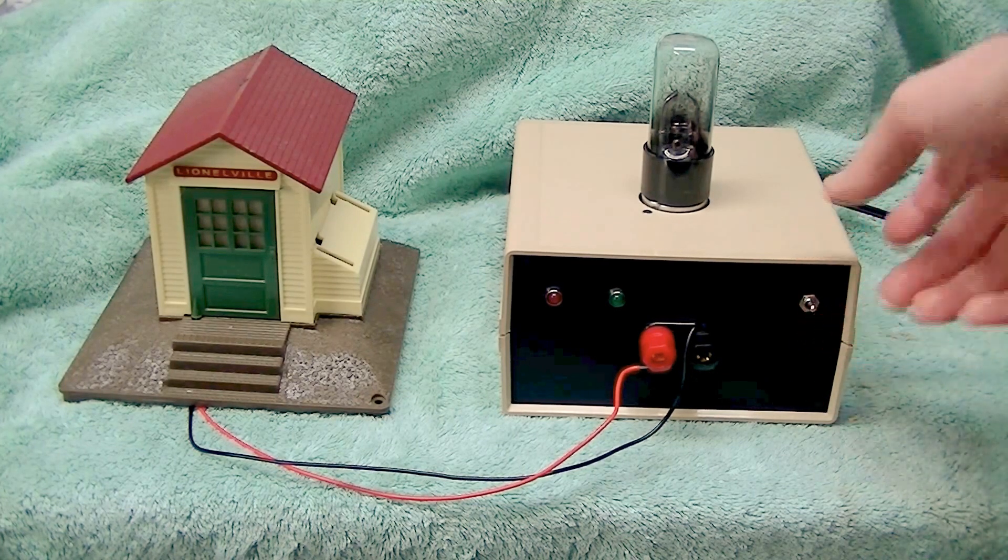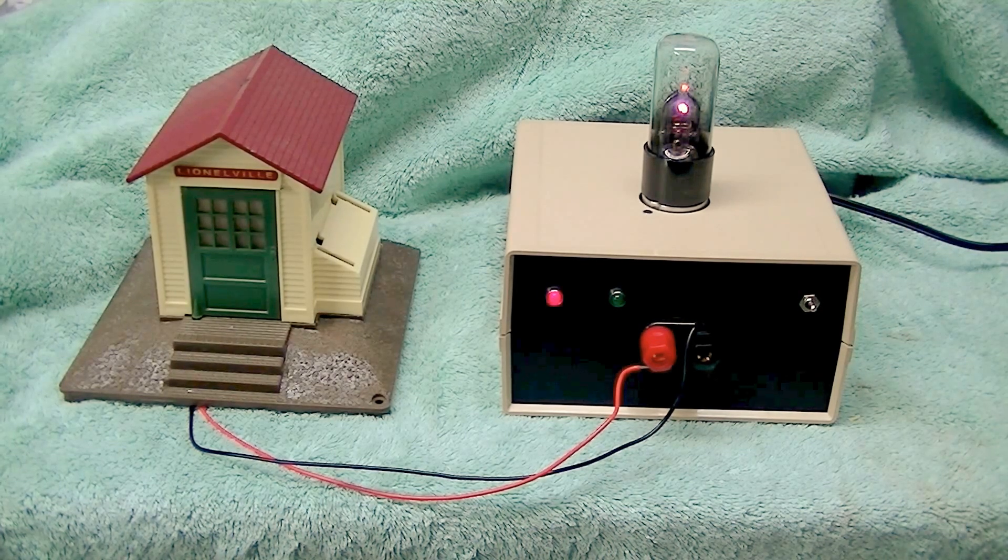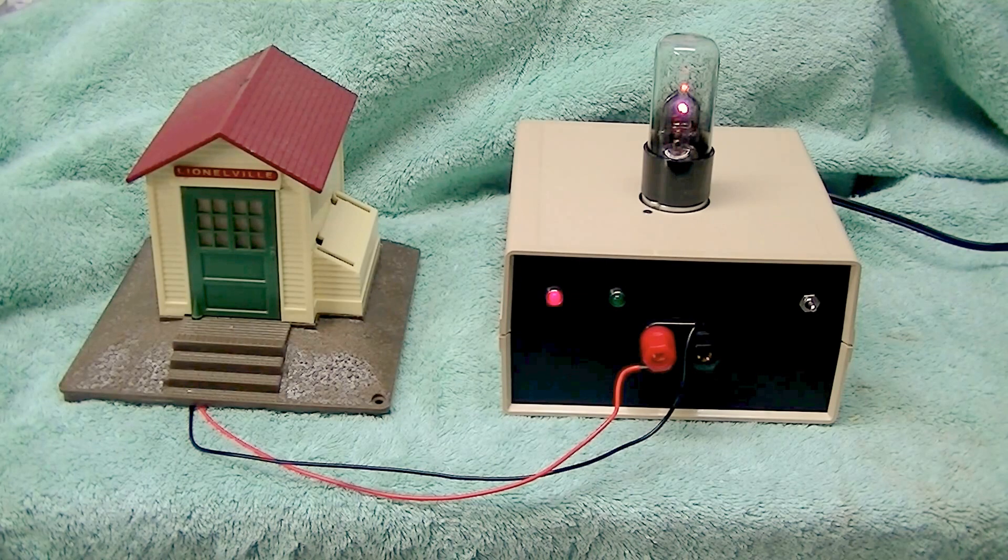When we first apply power to the unit the tube filament comes on. The filament glow is a standard orange red color but the camcorder picks it up as white. It looks much better in real life.